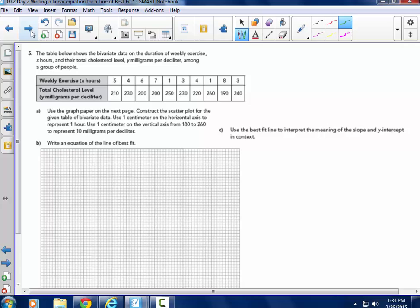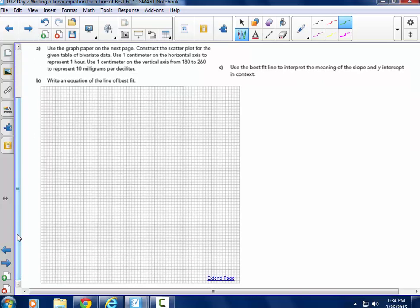Page 19. The table below shows the bivariate data on the duration of weekly exercise X and the total cholesterol level Y in milligrams per deciliter among a group of people. So they tell you how to set up the graph, construct the scatter plot for the given table of bivariate data. Use 1 centimeter on that horizontal axis. Again, I would like you to use a straight edge to put your horizontal axis on here.